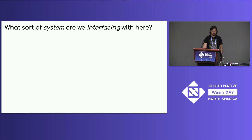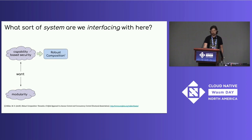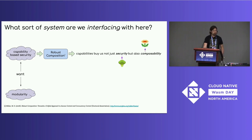That immediately raised the question: what sort of system are we even interfacing with here? One does not just generically interface with systems. From experience, we had high-level goals of capability-based security and modularity. So we did background research, seeing what work had already been done that we could learn from. In the direction of capability-based security, a great resource is Mark Miller's dissertation on robust composition. The takeaway for me was that capabilities enable not just security — which is like eating our vegetables — but also composability, which is like the fire flower that makes us Fire Mario and productive.